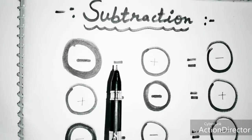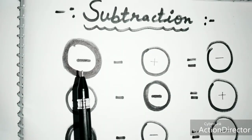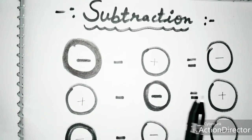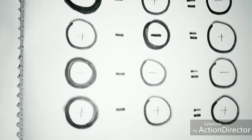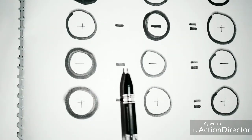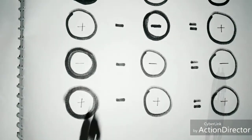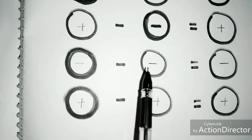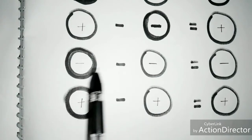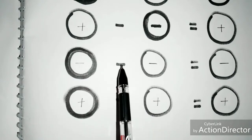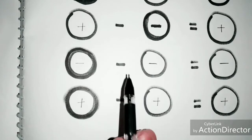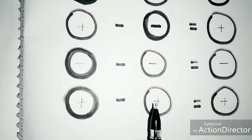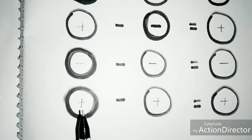In subtraction of integers: minus minus plus equals minus, because the number with the minus symbol is greater compared to the positive. Plus minus minus equals plus. Minus minus minus equals minus, because when we multiply these both minuses it gives a positive symbol. Plus minus plus equals plus because the positive symbol is greater.